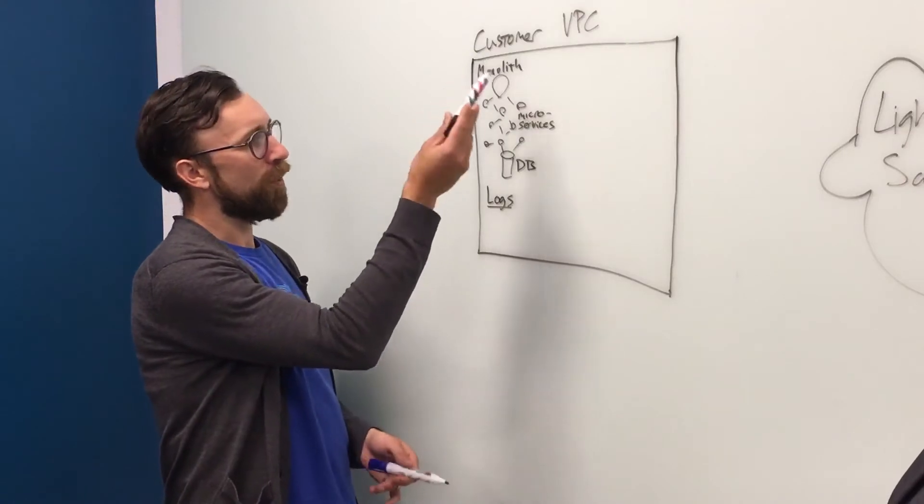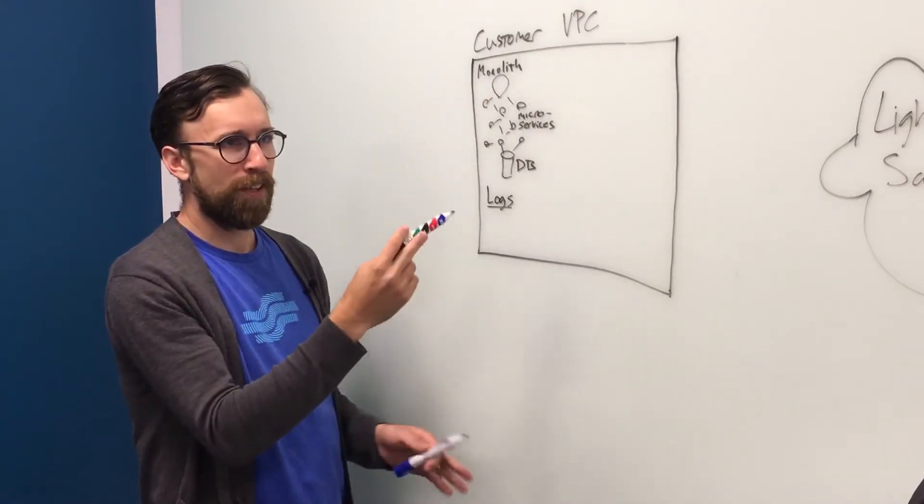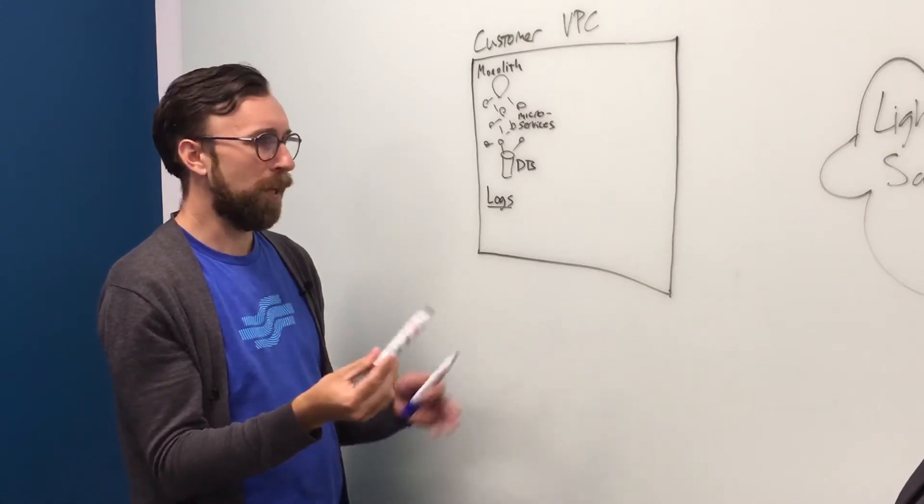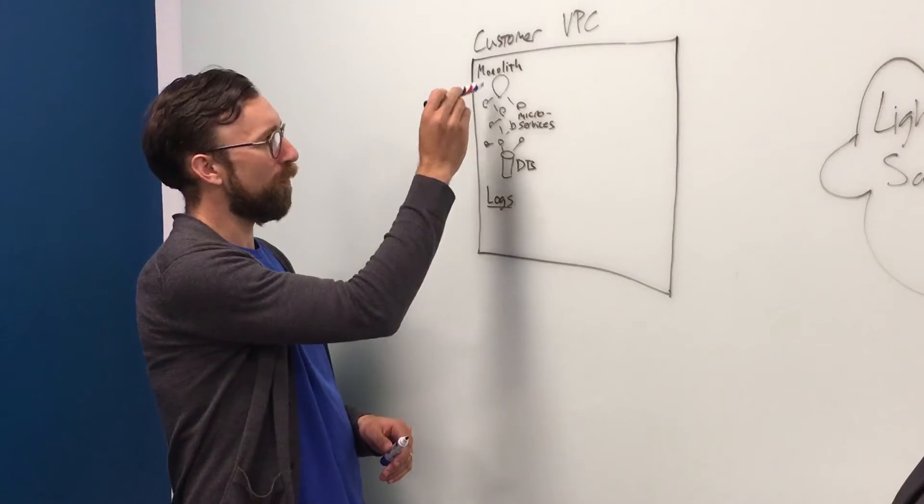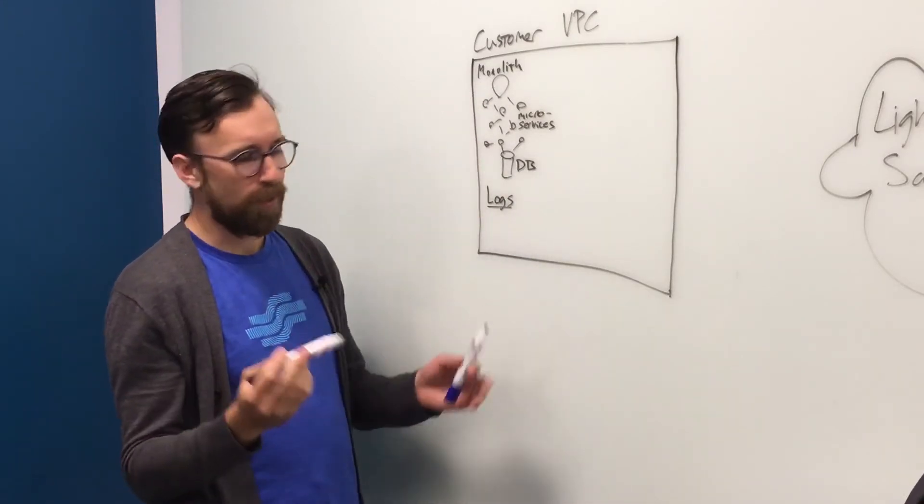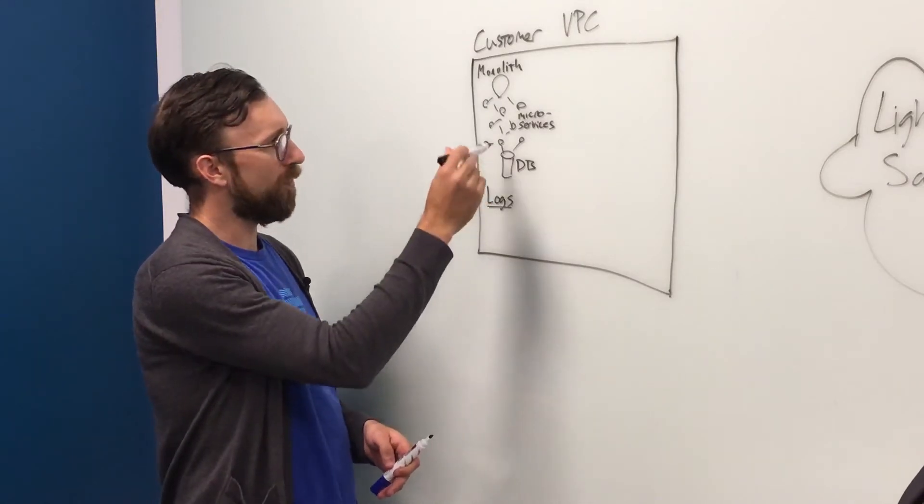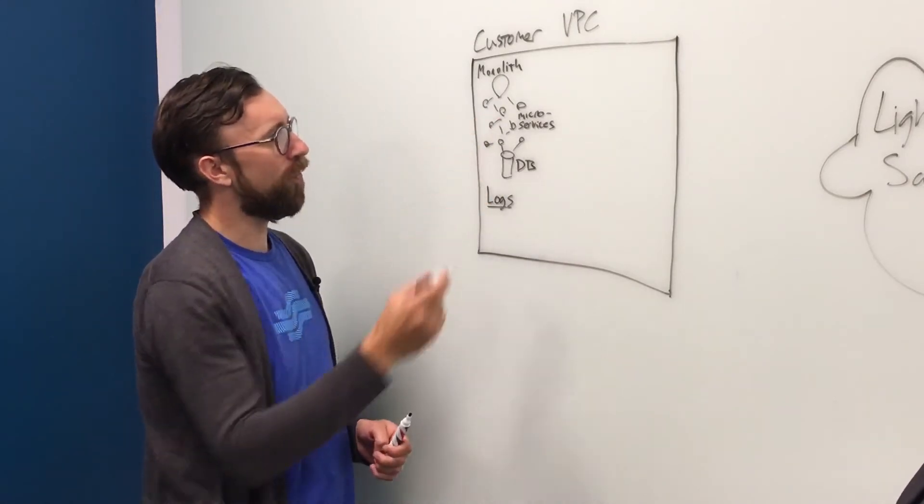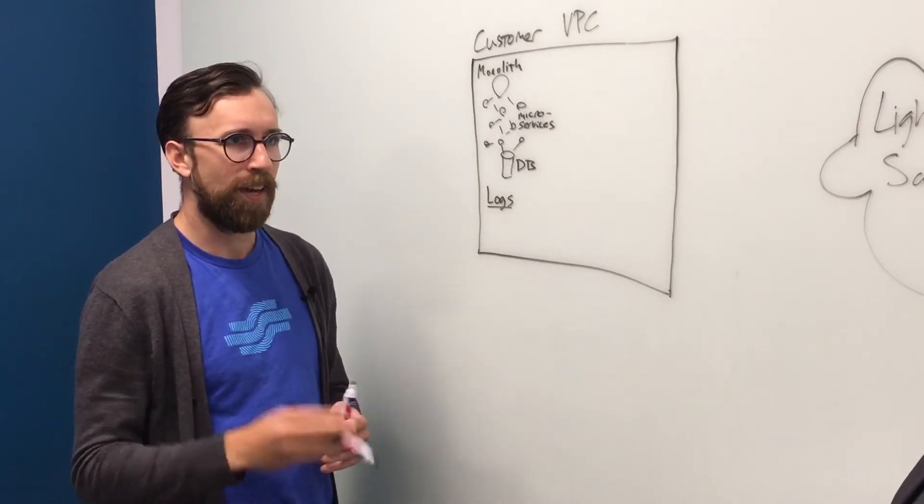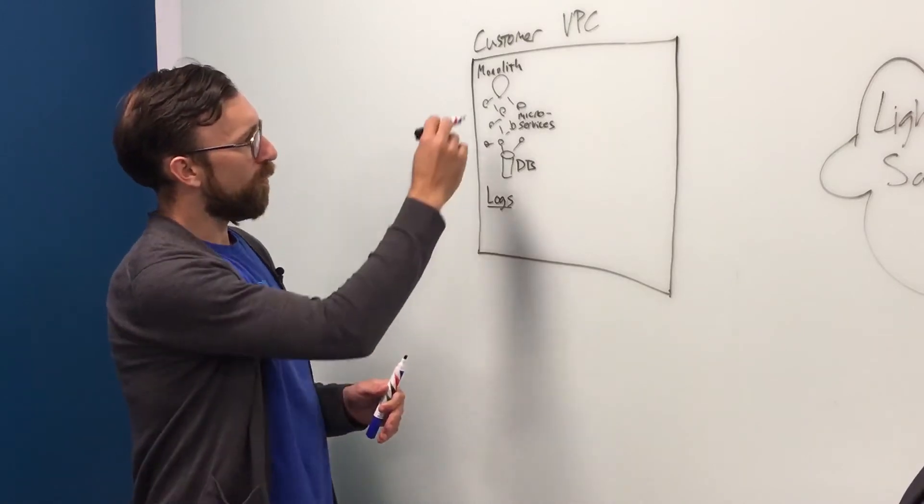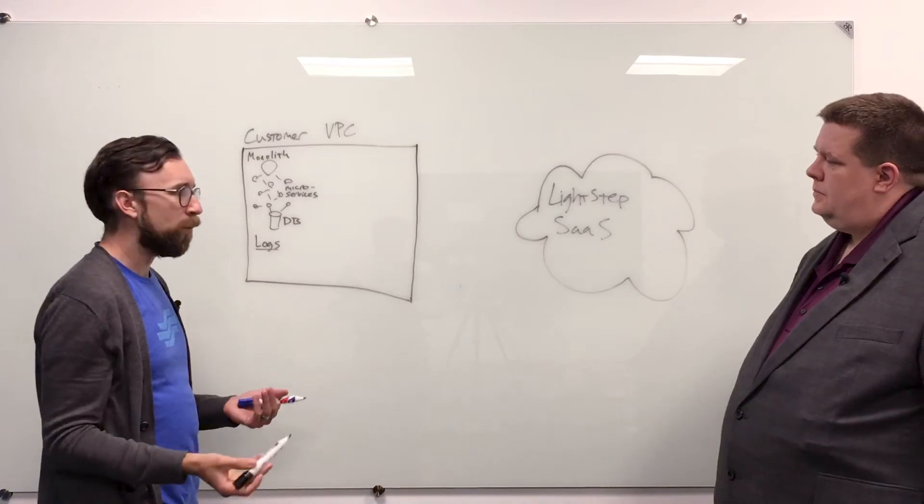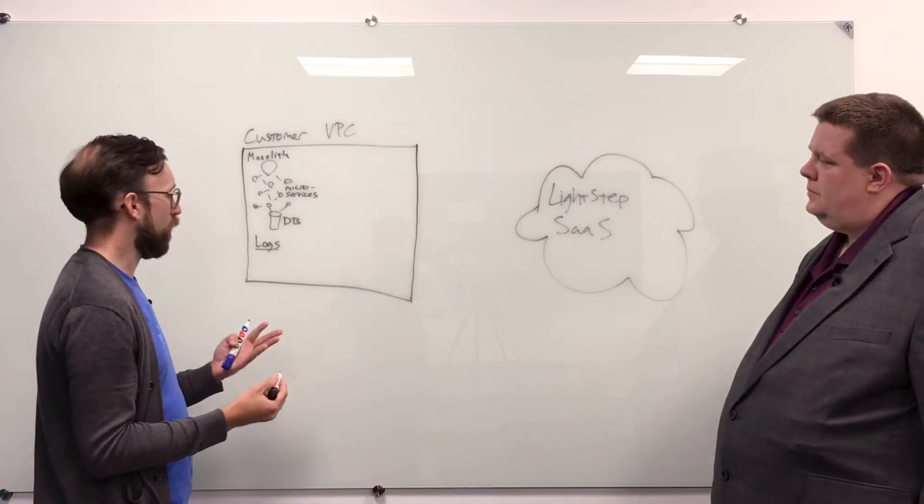Our customers typically run in AWS or GCP or Azure, and sometimes they have bare metal data centers as well. Some of them are processing payments and have PCI requirements. But they always have some kind of monolith, some kind of database—sometimes a scalable NoSQL database—and then some number of microservices. The number varies from five to a couple thousand on the high end. These things are all communicating, and there's a great deal of confusion. That's usually where LightStep steps in. We help them understand what's going on in that system and root cause things quickly.